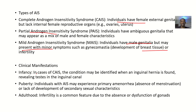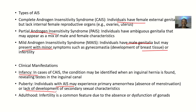In terms of clinical manifestations, in infancy the condition may be identified when an inguinal hernia is found, revealing testes in the inguinal canal — undescended testes. At puberty, individuals with androgen insensitivity syndrome primarily experience amenorrhea, which is an absence of menstruation, or there may be a lack of development of secondary sexual characteristics.